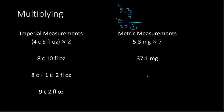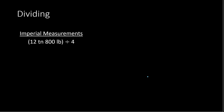We've done addition, subtraction, and multiplication. Now, lastly, we're going to work with dividing. First, dividing with imperial measurements: our example is 12 tons 800 pounds divided by 4. Just like with multiplying, with division we divide each unit by the number we're dividing by. So 12 tons divided by 4 gives 3 tons, and 800 pounds divided by 4 gives 200 pounds. So the answer is 3 tons, 200 pounds.